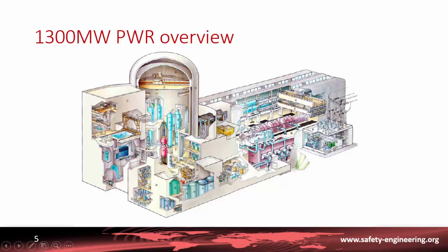Here is the turbine building, where you can see the main turbine and the generator at the end. Of course, there are many auxiliary facilities around, such as tanks to store liquid waste and elements to make up the water inside the primary or secondary system.